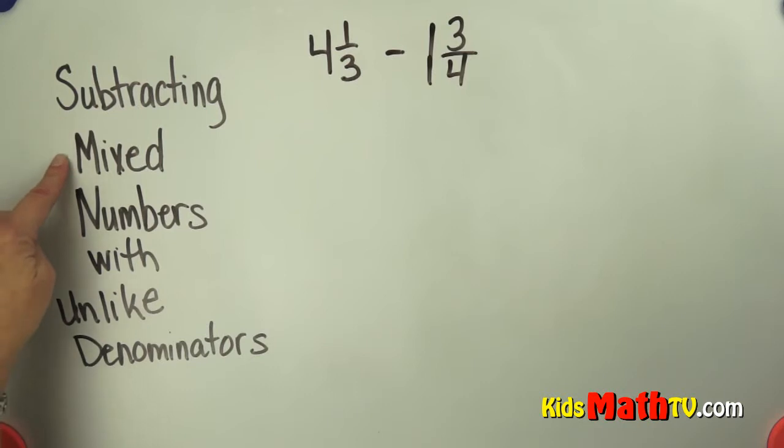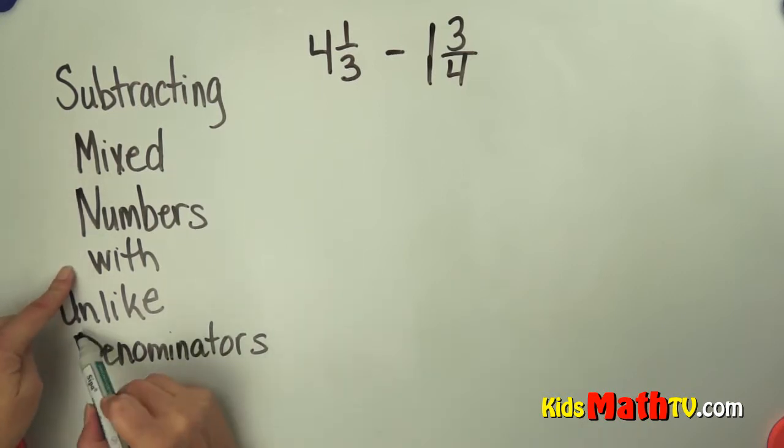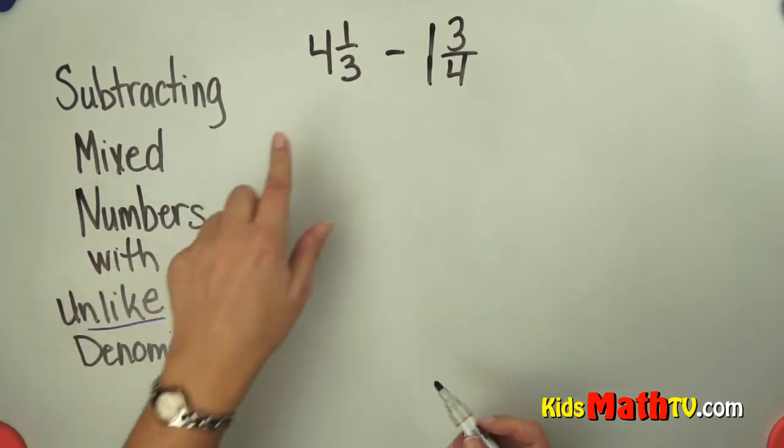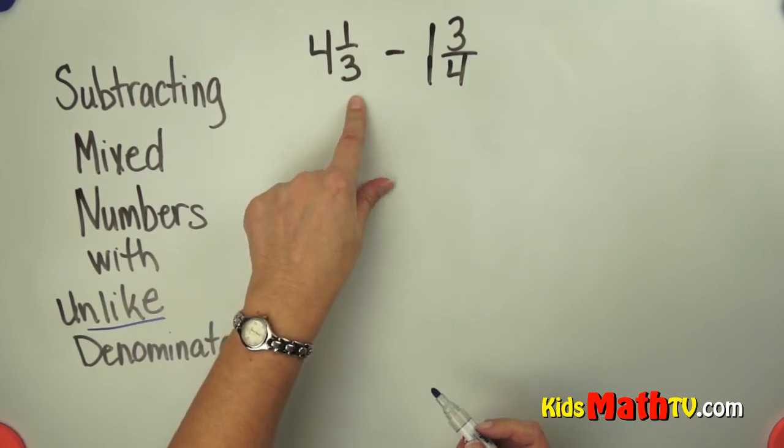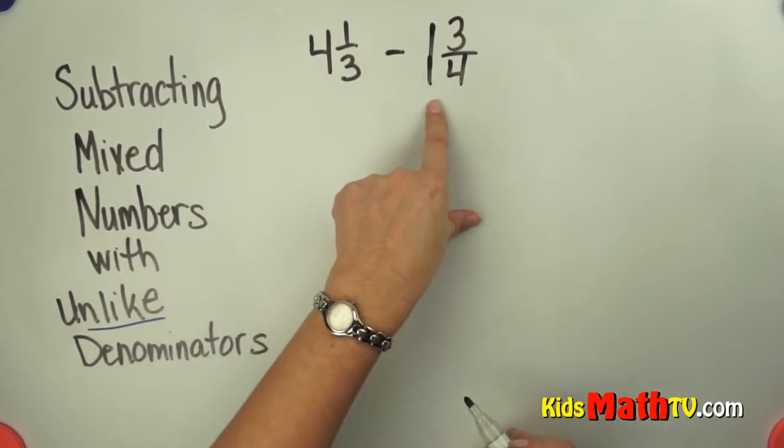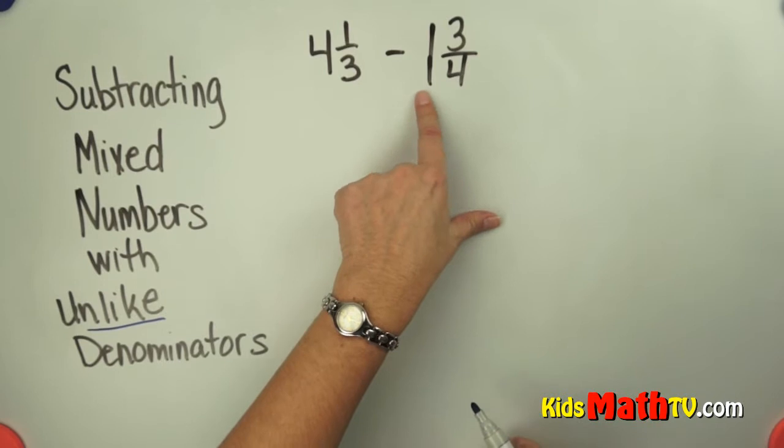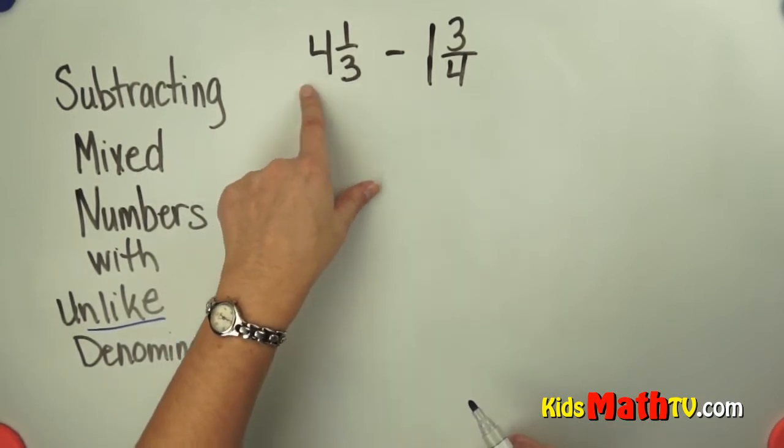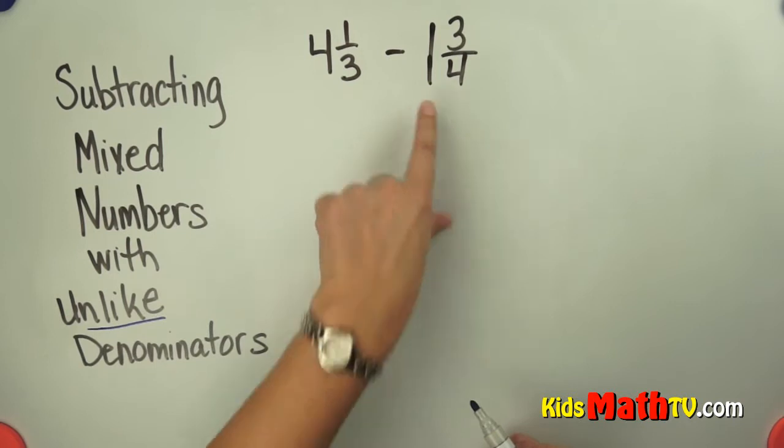In this lesson you will learn about subtracting mixed numbers with unlike denominators. So here we have 4 and 1 third, which is a mixed number, minus 1 and 3 fourths. And we know that 1 and 3 fourths is smaller than 4 and 1 third, because 4 is greater than 1.